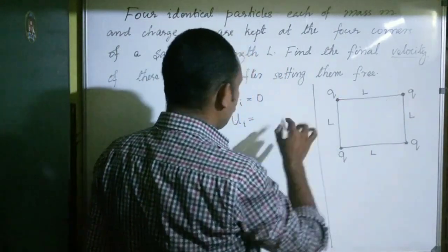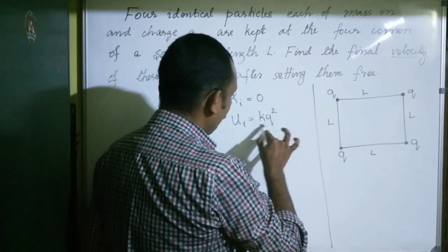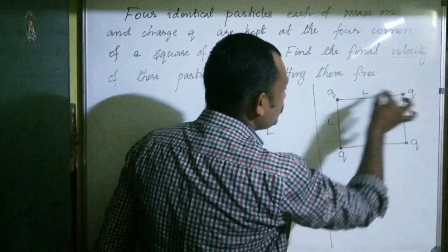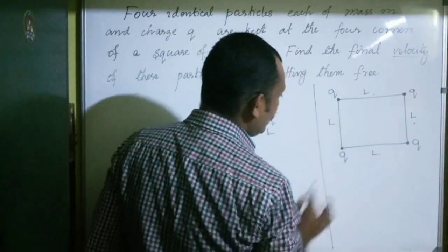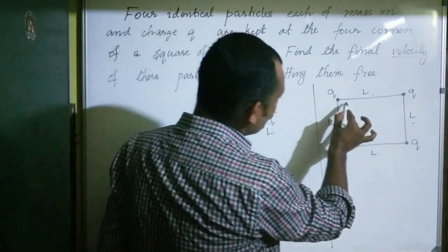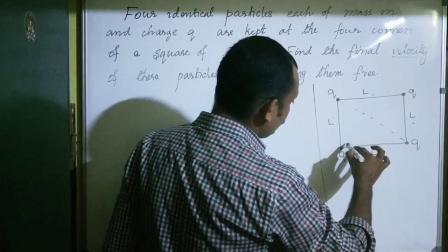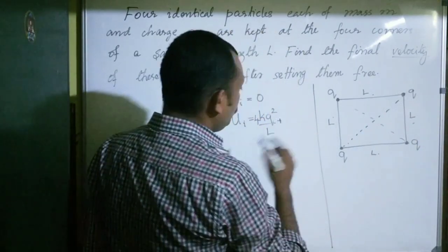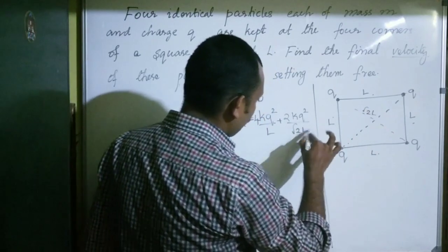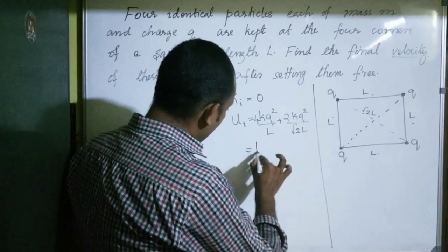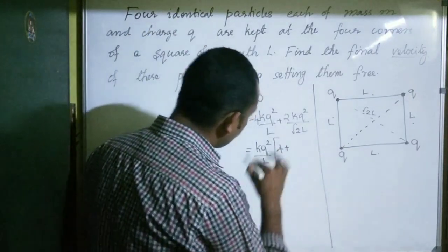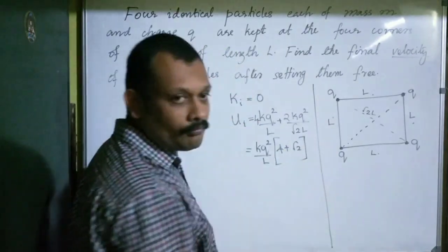Each pair of charges separated by distance L has mutual potential energy KQ²/L. There are 4 such pairs along the sides, giving 4KQ²/L. There are also 2 diagonal pairs, each separated by √2·L, giving mutual potential energy 2KQ²/(√2·L). Taking KQ²/L as a common factor, the total initial potential energy is KQ²/L × (4 + √2).